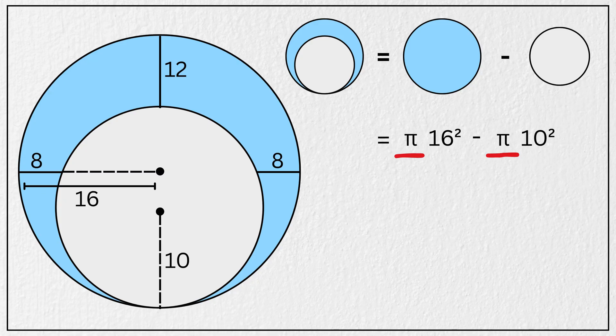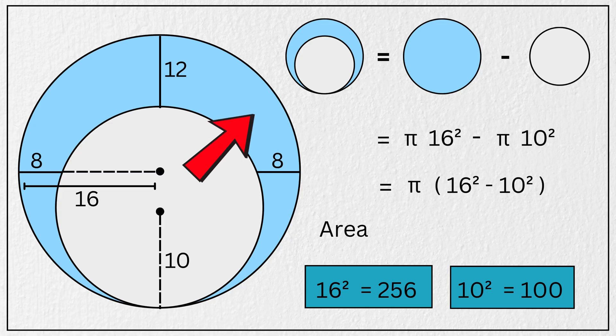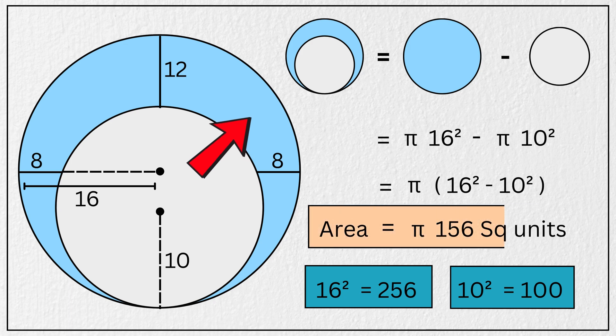Taking pi common from both sides, we get pi times the quantity 16 squared minus 10 squared. 16 squared is 256, and 10 squared is 100. So the area of this blue shaded region is pi times the quantity 256 minus 100, which is pi times 156 square units. And that's our final answer.